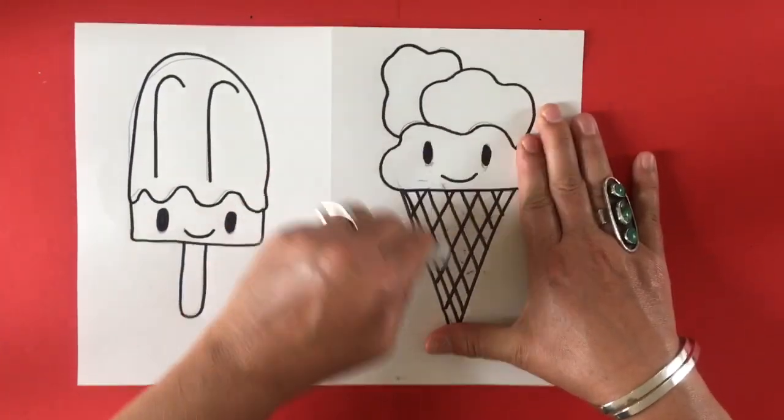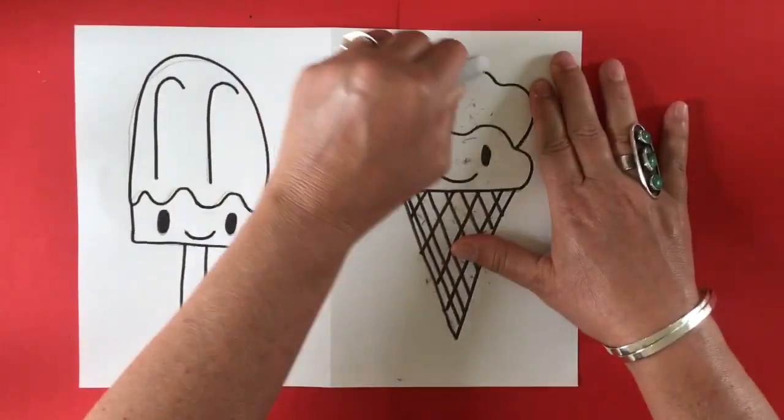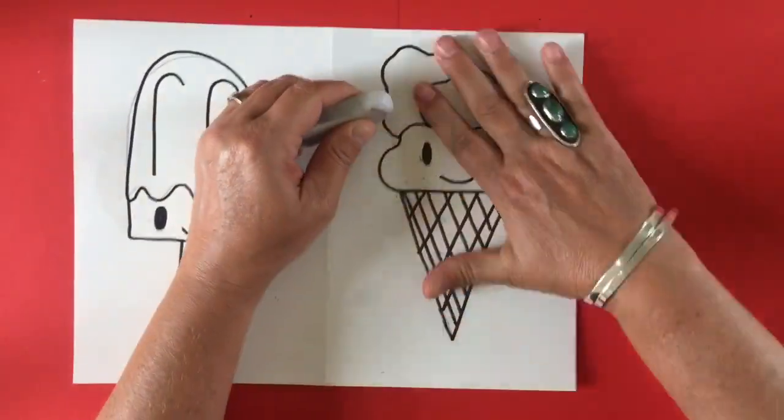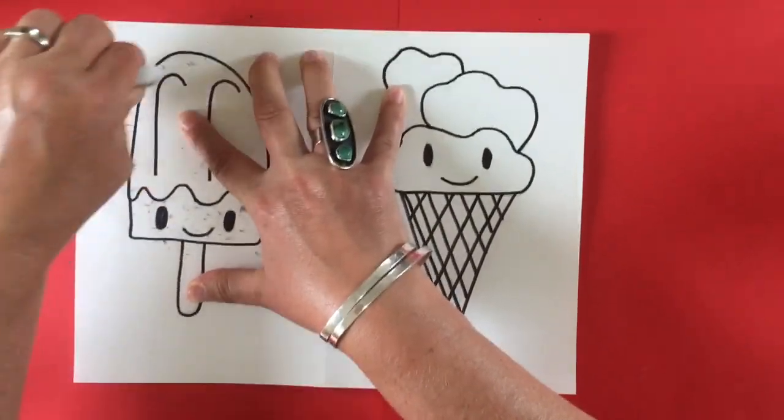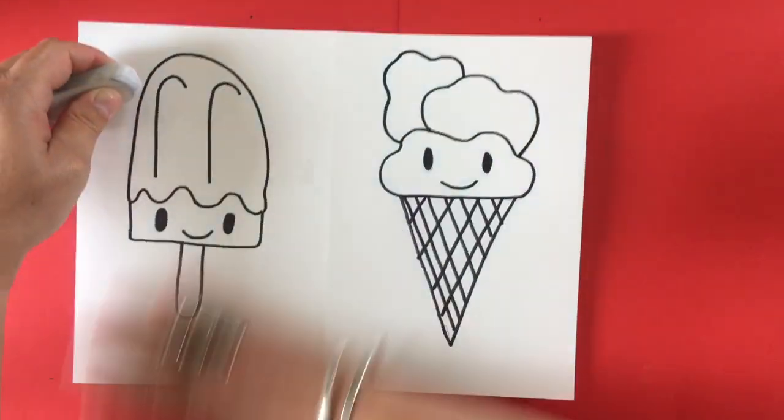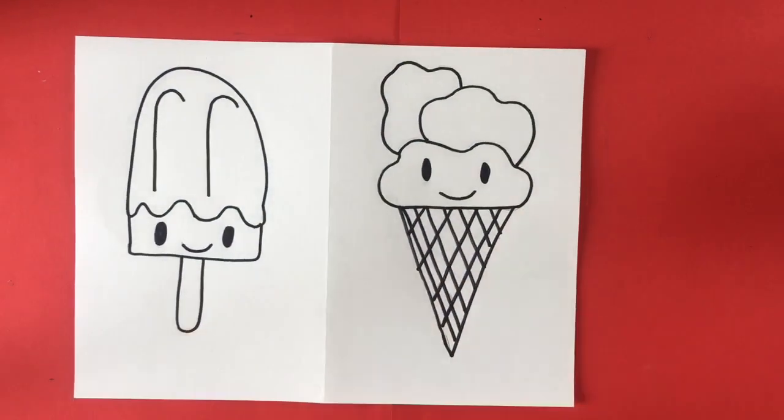Now it's time to erase all those pencil lines and getting out my eraser. I am erasing anything I can see as far as the pencils to clean it all up so I can get ready to put color on both of them.